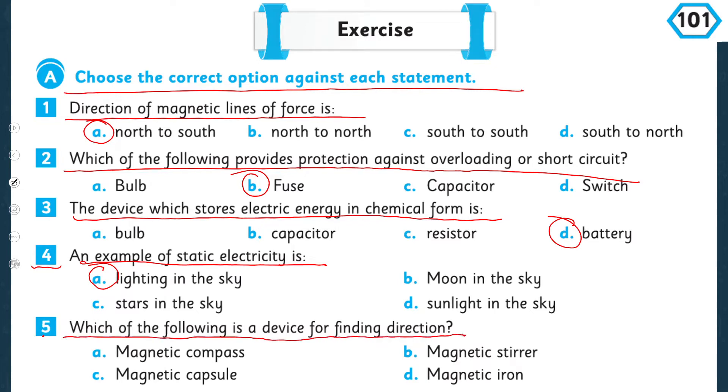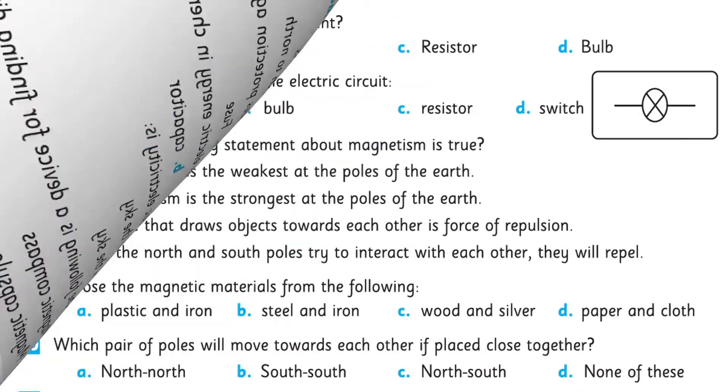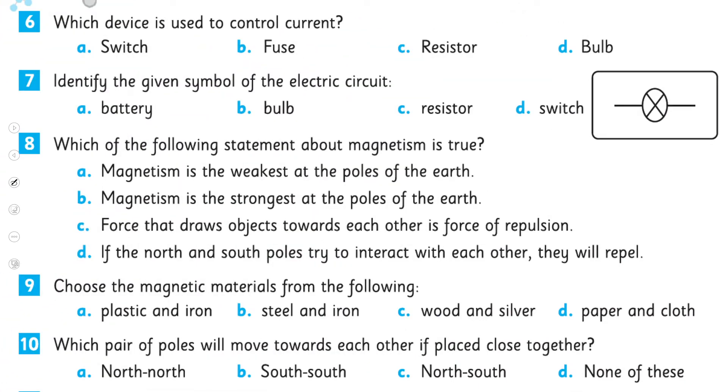Number five: which of the following is the device for finding direction? That is magnetic compass, magnetic stirrer, magnetic capsule, magnetic iron. So that is a magnetic compass. Next is on page number 106. Which device is used to control current? That is switch, fuse, resistor, bulb. So that is a resistor.